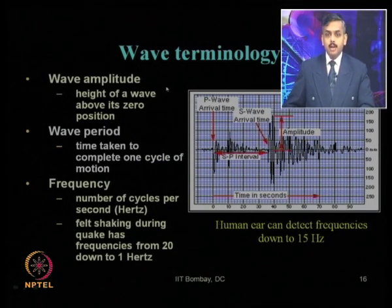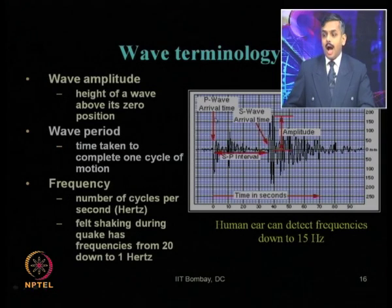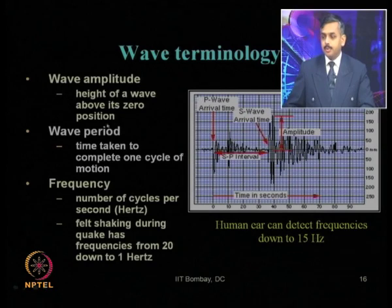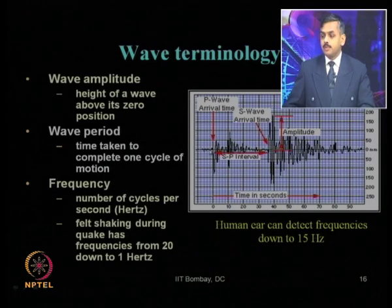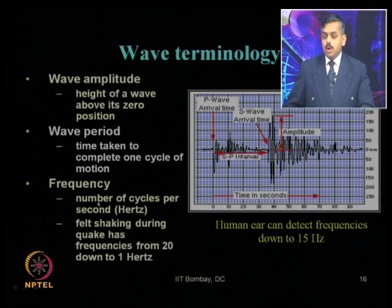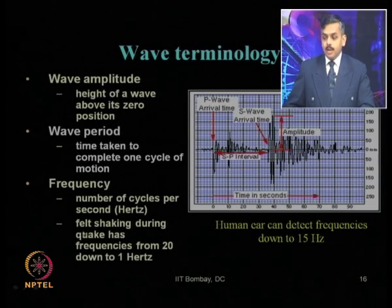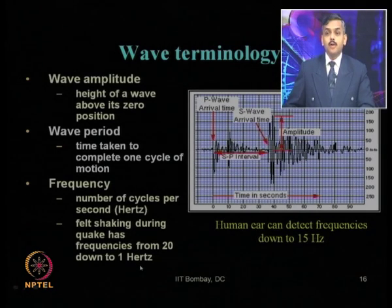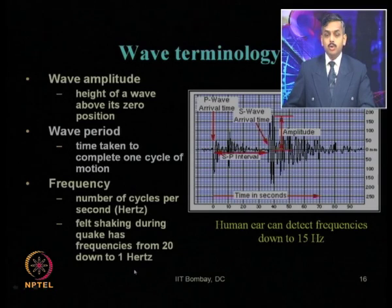Common wave terminologies: wave amplitude is the height of a wave above its zero position. Wave period is the time taken to complete one cycle of motion. Wave frequency is the number of cycles per second, expressed in hertz. The felt shaking during a quake has frequencies from 1 hertz to 20 hertz — this is the typical range of earthquake frequencies.